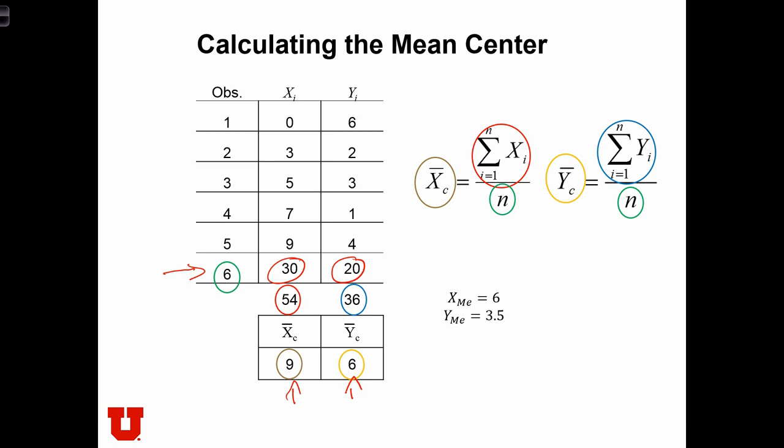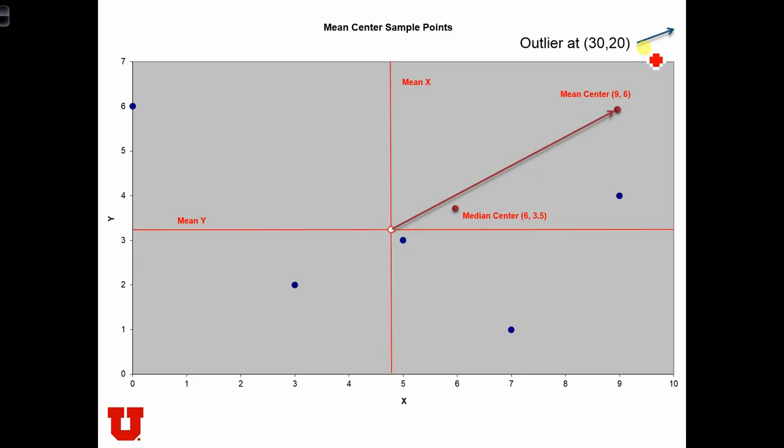So the addition of just one large spatial outlier is pulling the mean center way off into the distance. The outlying point is somewhere over here located at 30, 20. But the influence of that one point will pull the mean center all the way from where it was before the addition of that point out to this location at 9, 6. So the single best point now is very much being driven by the fact that there's an outlier off to the top right.